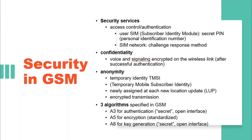In the GSM standard, only algorithm A5 was publicly available, whereas A3 and A8 were secret but standardized with open interfaces. A3 and A8 are no longer secret, as they were published on the internet in 1998. This demonstrates that security by anonymity does not really work.